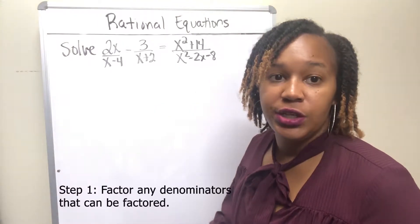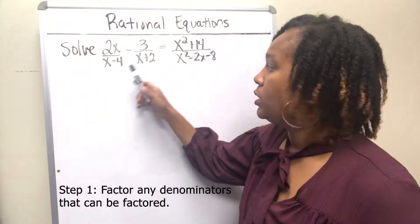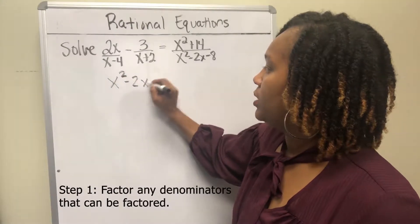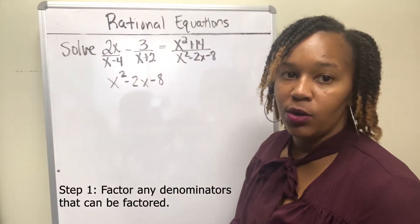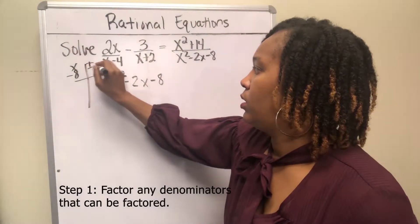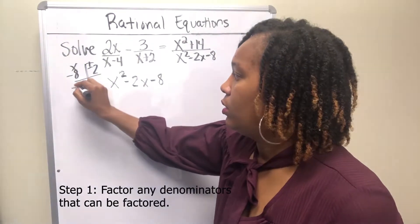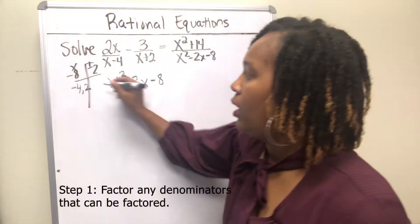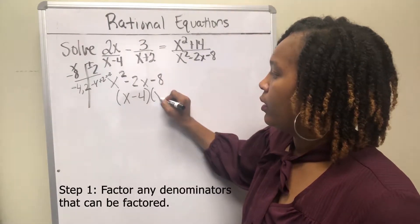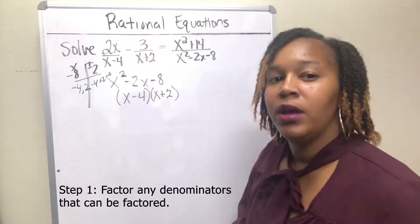The very first thing you want to do is factor any of your denominators if they can be factored. x minus 4 cannot be factored, x plus 2 also cannot be factored, but x squared minus 2x minus 8 is a trinomial with a leading coefficient of 1. It can be factored by taking factors of negative 8 that add to negative 2. Negative 4 times 2 is negative 8, and negative 4 plus 2 is negative 2. So this factors into (x minus 4)(x plus 2). You want to factor your denominators first so they're already in factored form — it makes them easier to work with.